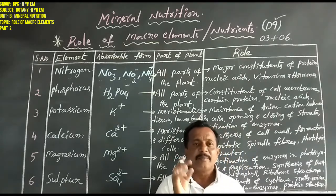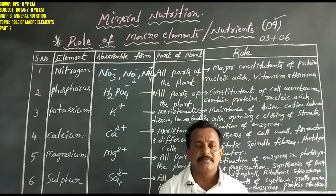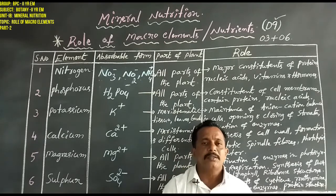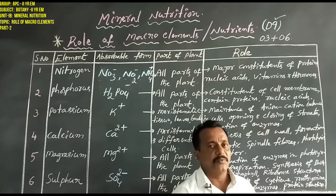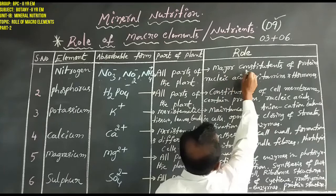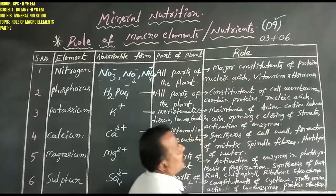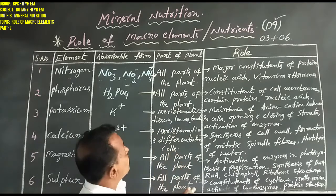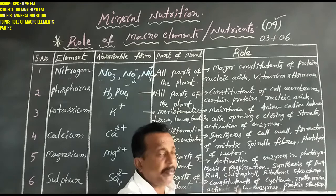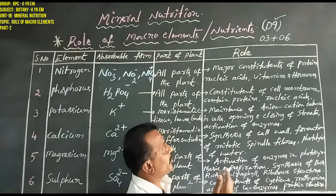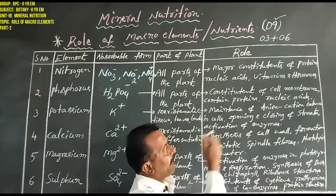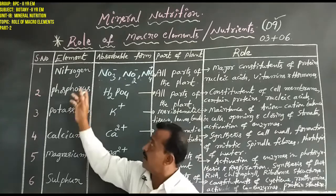Nitrogen is the major essential mineral element required by plants and is present in all plant parts. The role of nitrogen includes being a major constituent of proteins, nucleic acids (DNA and RNA), water-soluble and non-water-soluble vitamins, and hormones.